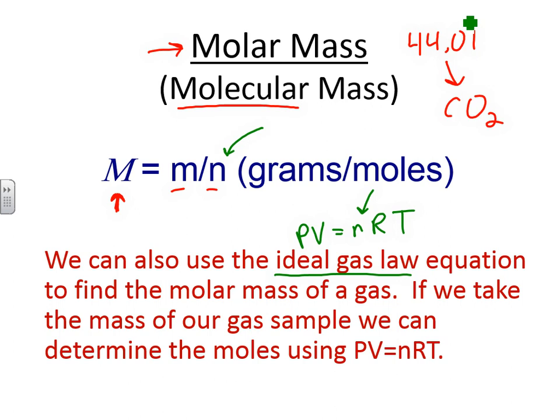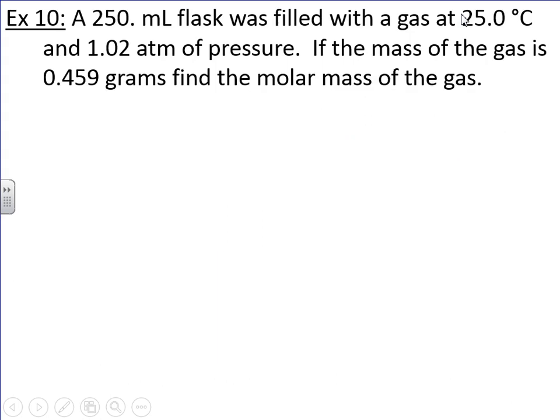So, let's try it, and you'll see what we mean here when we do an example problem. A 250 milliliter flask was filled with a gas at 25 Celsius and 1.02 atm of pressure. If the mass of the gas is 0.459 grams, find the molar mass of the gas. So, this is an experiment set up where you have yourself a flask, some sort of flask that's been filled with a gas. It's 250 mils in size, and we've measured the temperature, we've measured the pressure of the gas, and we've measured the mass. All three of these are pretty easy to do, and from that, we can actually determine the molar mass of this gas.